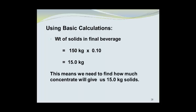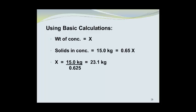This means we need to find how much concentrate will give us 15 kilograms of solids. The weight of the concentrate is equal to x, so the solids in the concentrate will be 15 kilograms, which is equal to 65% of x, because there were 65% solids in the concentrate, and the weight of the concentrate is x kilograms. Solving for x, we find that x is equal to 15.0 kilograms divided by 0.65, which is 23.1 kilograms.